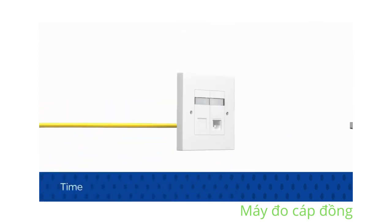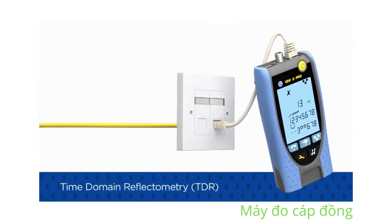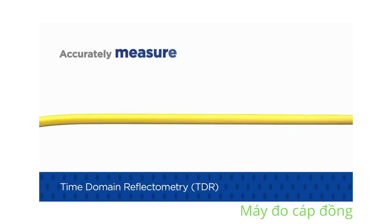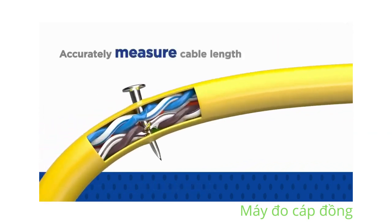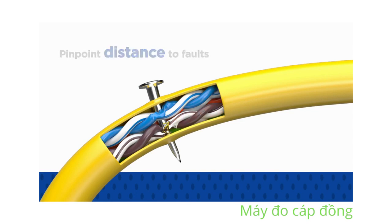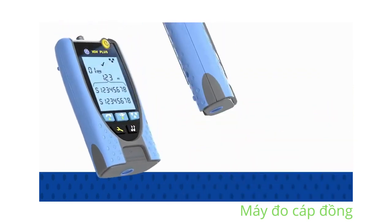The PRO model utilizes time domain reflectometry, or TDR, to accurately measure cable length and pinpoint distance faults, such as open and short circuits caused by damage to the cabling during and after installation.